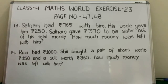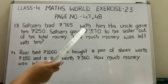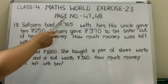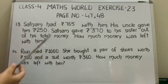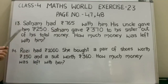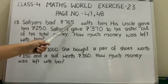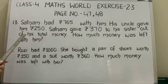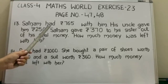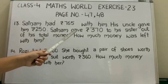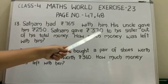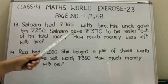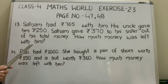Hello students. Today we will solve question number 13 of exercise 2.3 given at page number 47. Satnam had 765 rupees with him. His uncle gave him 250 rupees. Satnam gave 370 rupees to his sister out of his total money. How much money was left with him?